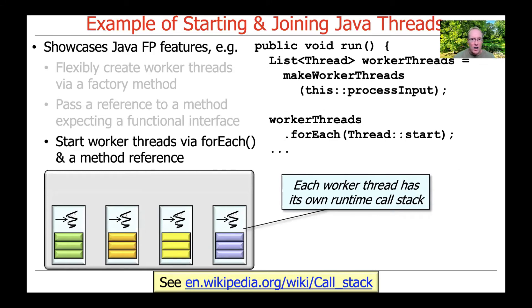When we start a worker thread, it creates a new runtime call stack to perform the operations — the methods defined in that thread — starting with the process input method passed in as a method reference. A thread is a unit of computation containing state specific to the thread: its own call stack, its own registers like the instruction pointer and stack pointer, and its own thread-specific storage. Threads also share other things within the context of a process. In Java and operating systems like Linux and Windows, a process is a unit of resource allocation and protection, within which multiple threads can run and get mapped to underlying cores to run in parallel.